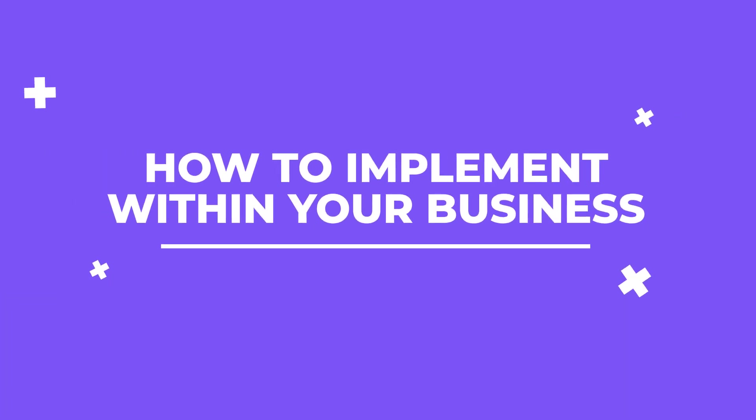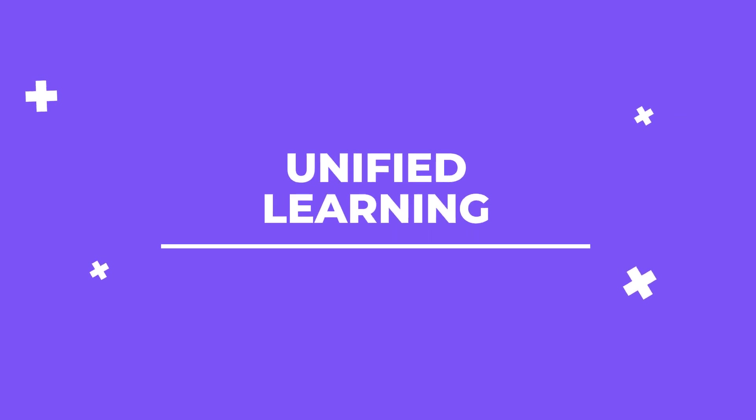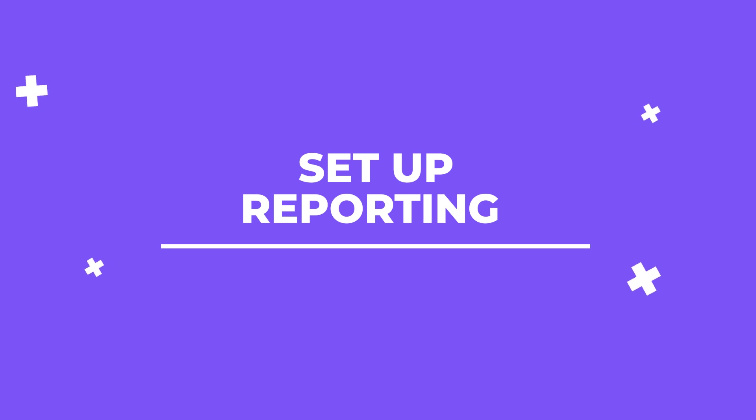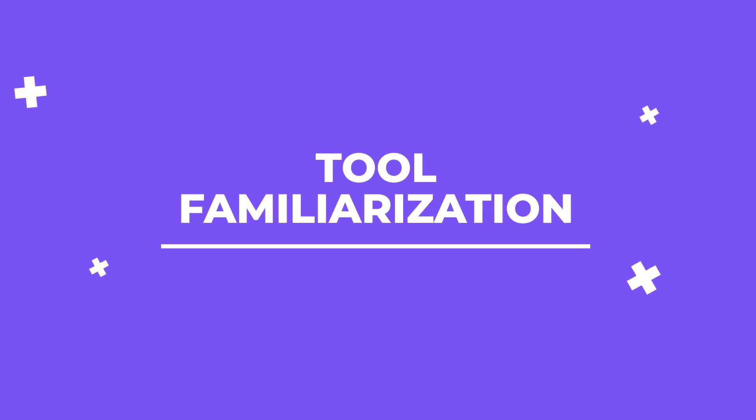Let's move on to how to implement this within your business — a seven-step implementation process. Number one, unified learning: if you're using virtual assistants or you've got a team, make sure that everyone is aligned — this should involve everyone watching this video. Number two, set up your reporting: grab the Google Sheet from the download link below and get that set up. Number three, familiarize yourself with the tools: install the tools I've talked about and spend a few days getting familiar. Get the data, start seeing the reporting, ensure the data is coming in accurately. Proper tracking is a prerequisite for making improvements — if you can't measure it, you can't manage it.